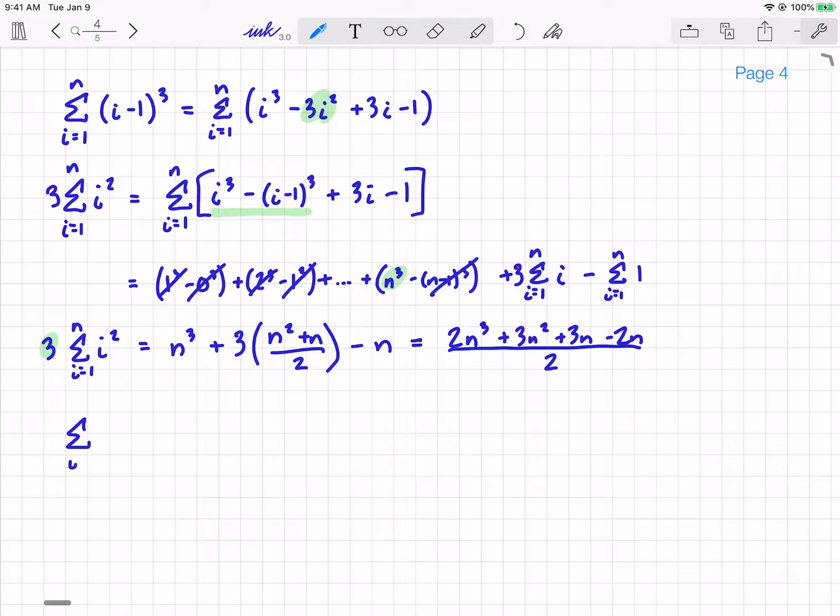And you end up with, and again I'll let you verify the algebra, the sum of i squared is equal to 2n cubed plus 3n squared, and then that 3n minus 2n just gives me a single n. That 2 in the denominator, when multiplied by the 3, gives me 6. And I get the classic formula. And if I rewrite this by factoring, I get n(n+1)(2n+1) all over 6. And this is the classic formula you will see in textbooks or online.